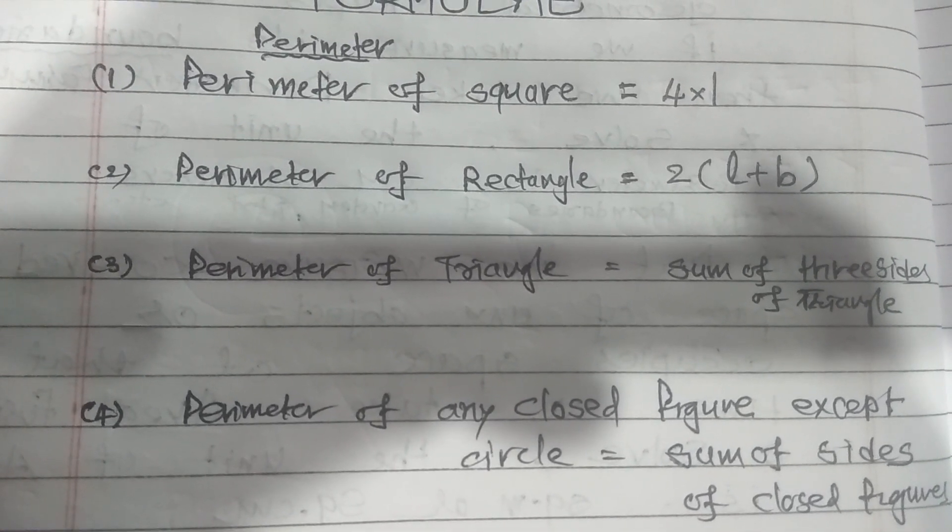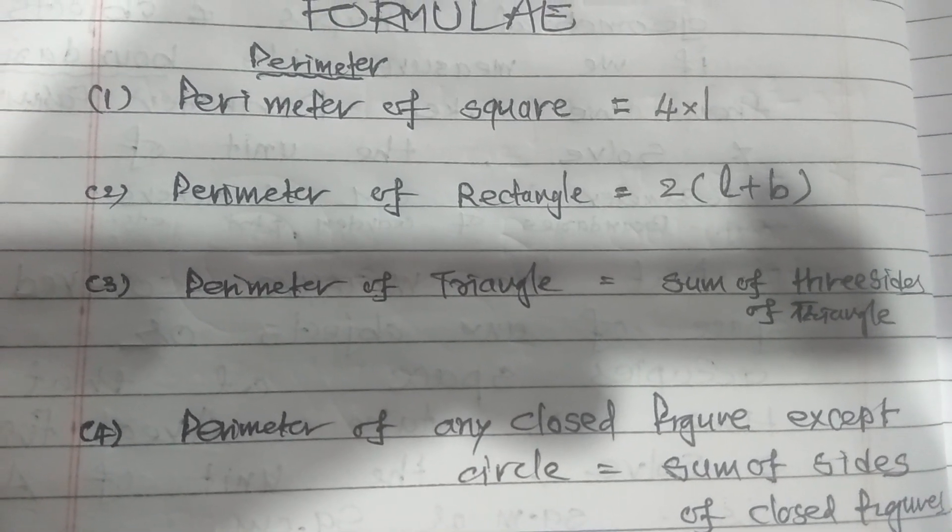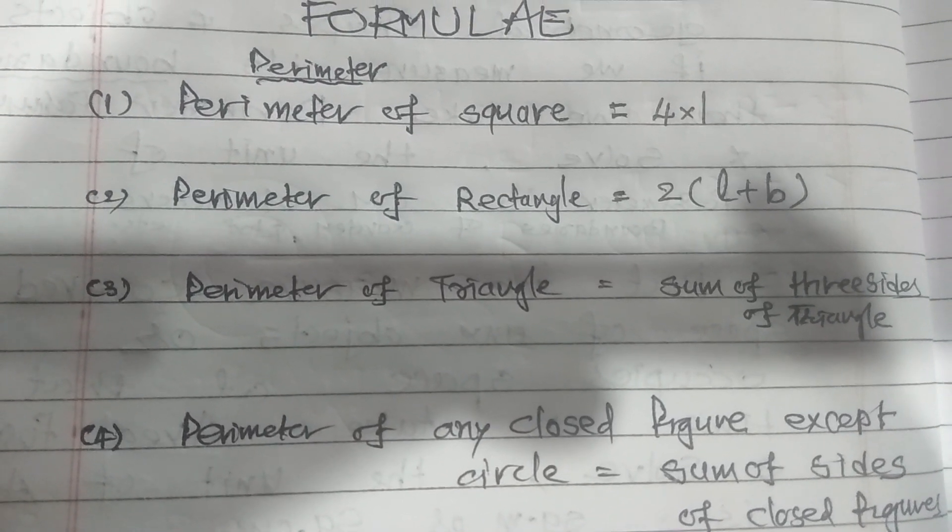But except circle, why not? Because circle formula is different for the perimeter. We will see that later.